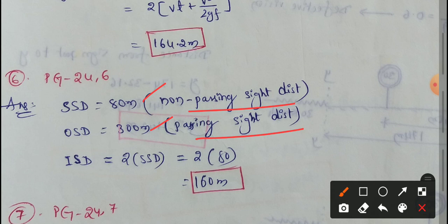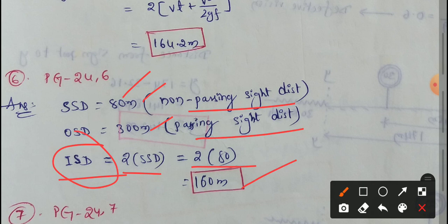What is the Intermediate Side Distance? Intermediate Side Distance is equal to 2 times SSD. So, simple: 2 into 80 equals 160 meters. So the ISD value is 160 meters. This is a simple question.